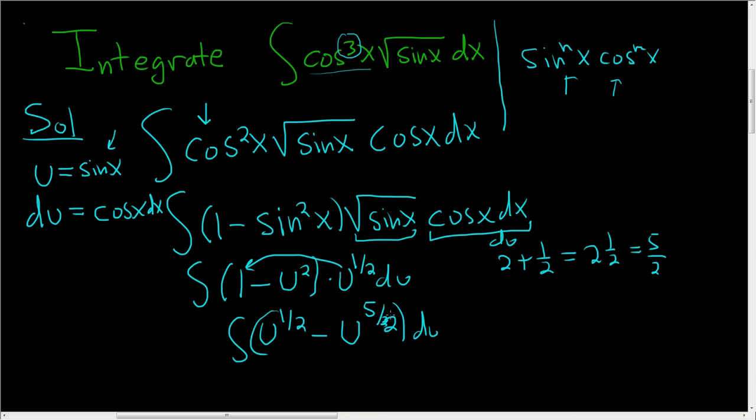Okay, now we can integrate. That's a 5 halves there. So let's integrate this. We add 1, so we get u to the 3 halves divided by 3 halves. But when you divide by 3 halves, you really multiply by 2 thirds, right? The reciprocal.